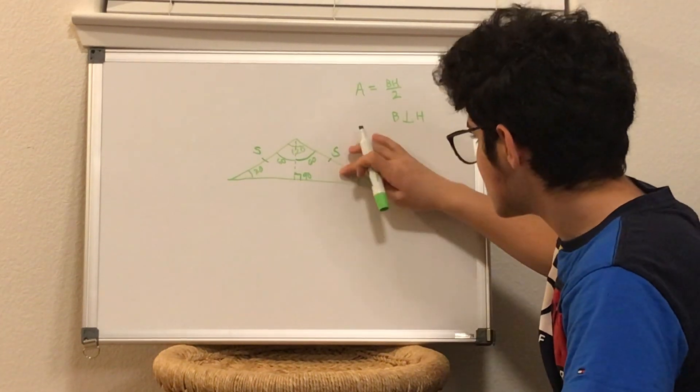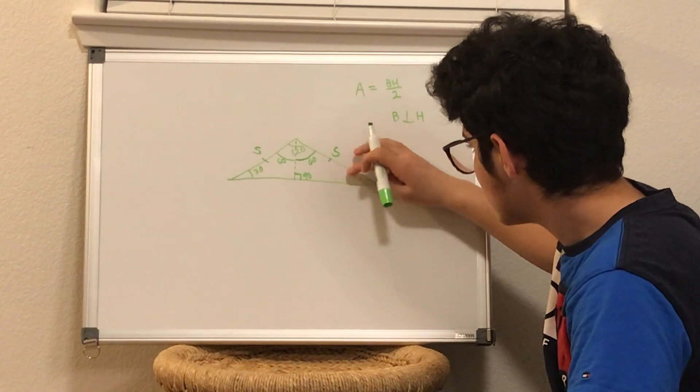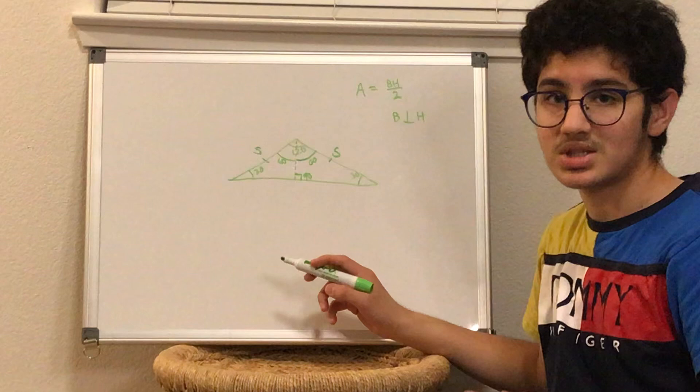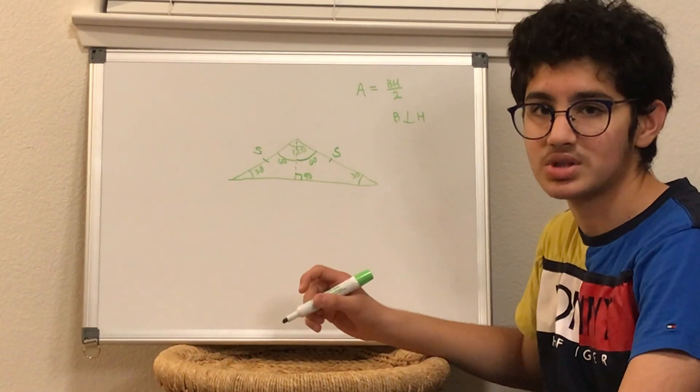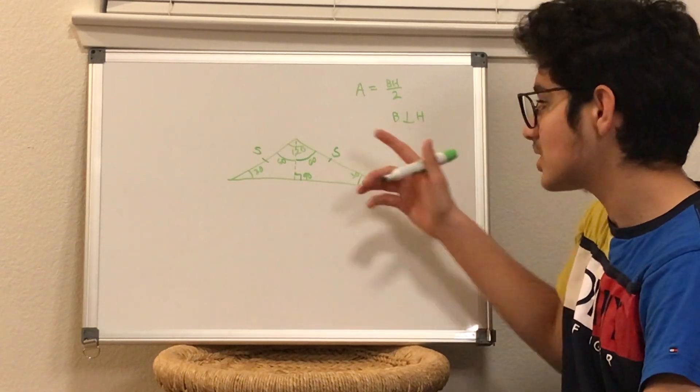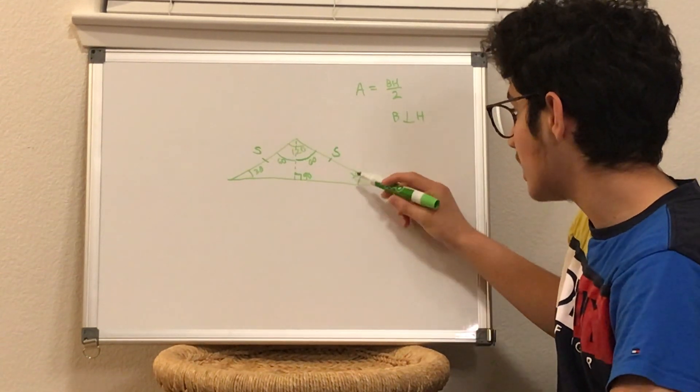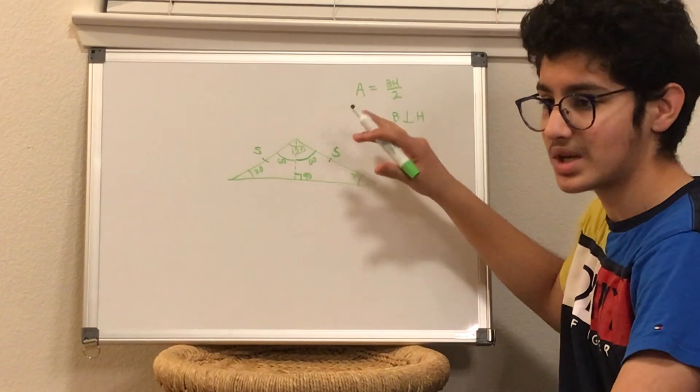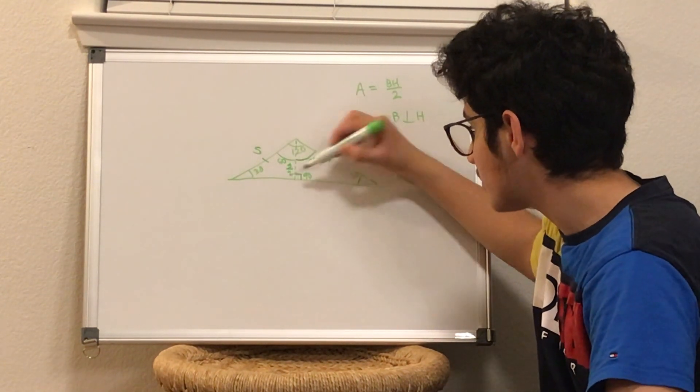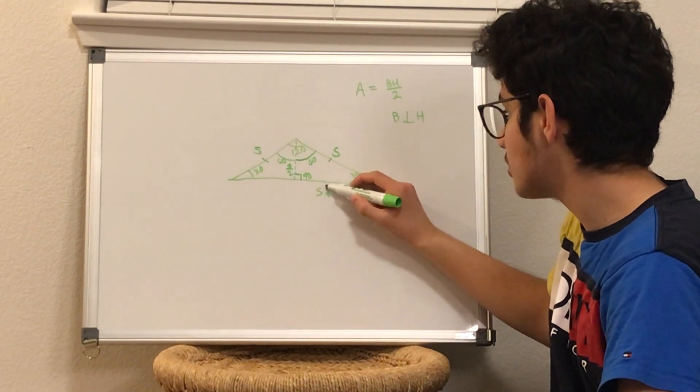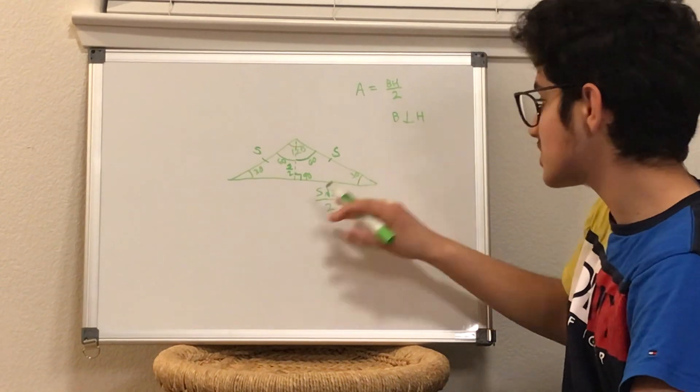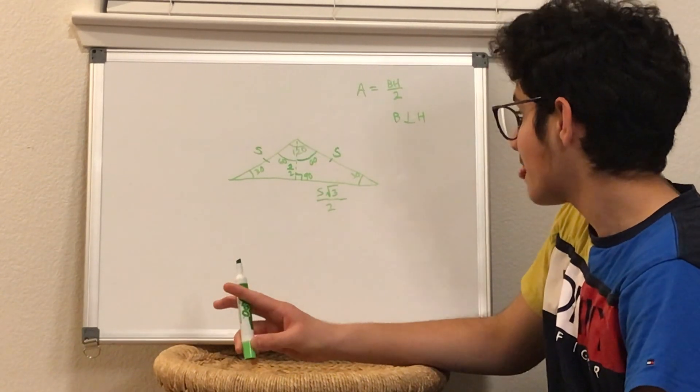If this is S, this is a 30-60-90 triangle, one of the most important ratios that you'll learn. So the ratios between the sides of a 30-60-90 triangle are: if the biggest side is S, the hypotenuse is S, this will be S over 2, so half as much as that, and this will be S root 3 over 2. This is just one ratio to remember.